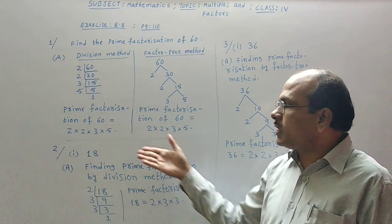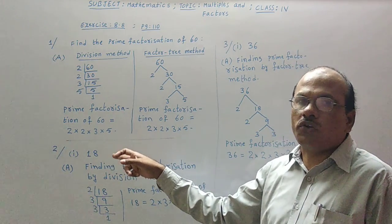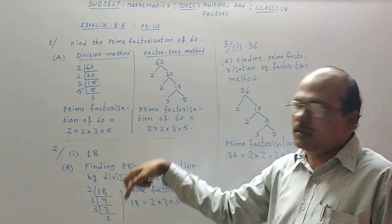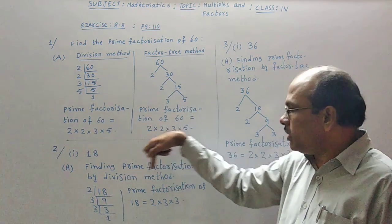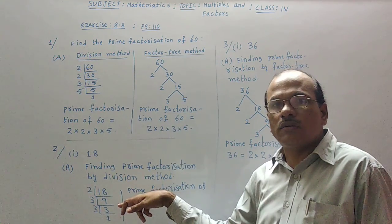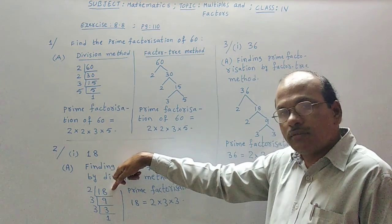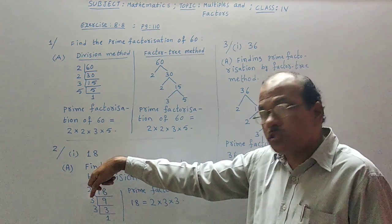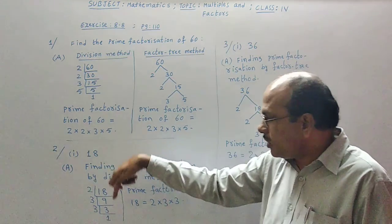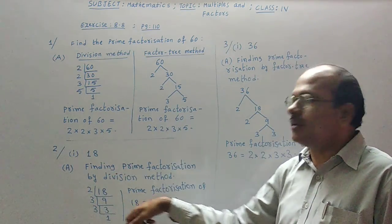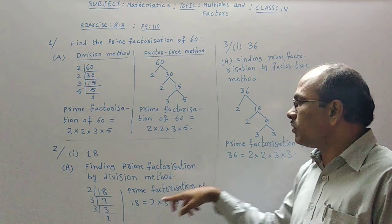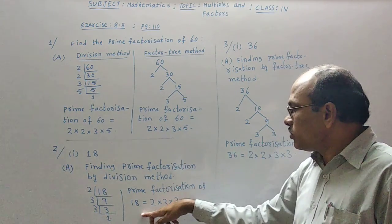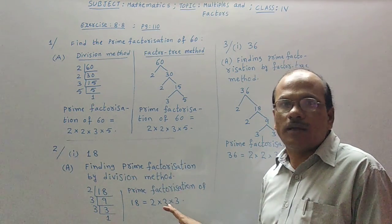Now second question. They said to find the prime factorization of 18 with division method. That means first method. Finding prime factorization by division method for 18. With 2 table, 2 times 9 is 18. Then goes for 3 table because 2 table is not possible, and 3 is a prime number again. 3 times 3 is 9. Again 3 table, 3 times 1 is 3. Prime factorization of given question 18 is equal to 2 into 3 into 3.